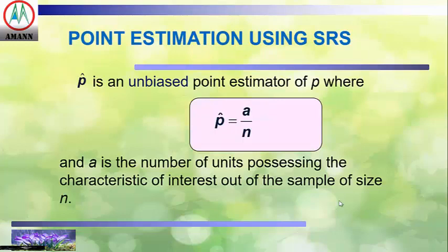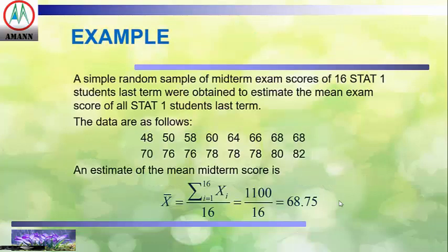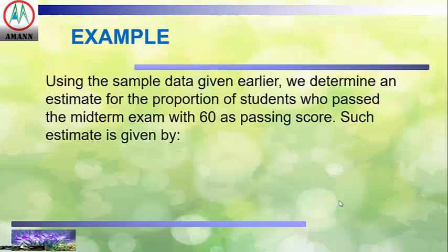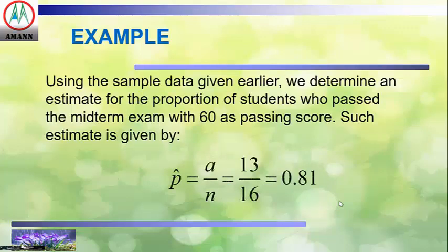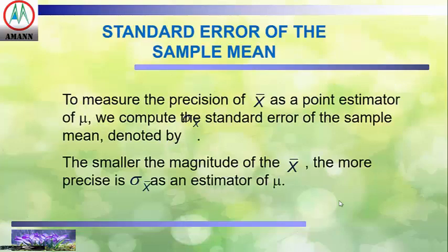P-hat is an unbiased point estimator of the population proportion p, where p-hat equals a over n, and a is the number of units possessing the characteristic of interest in the sample of size n. Example: using the sample of 16 STAT 1 students with a mean midterm score of 68.75, we determine an estimate of the proportion of students who passed the midterm exam with 60 as the passing score. That estimate is p-hat equals 13 over 16, which equals 0.8125.